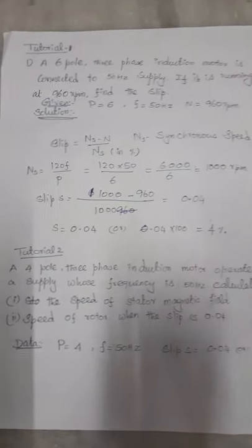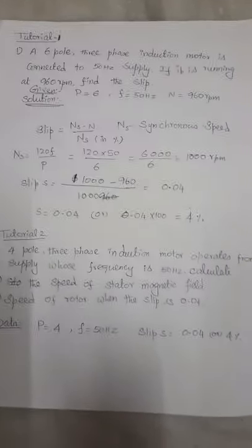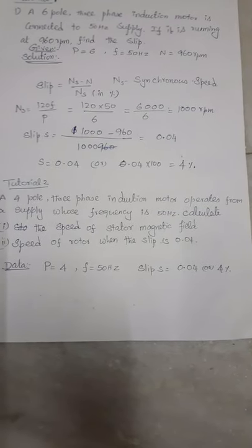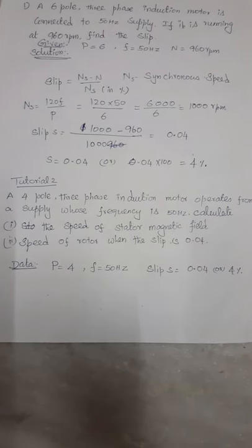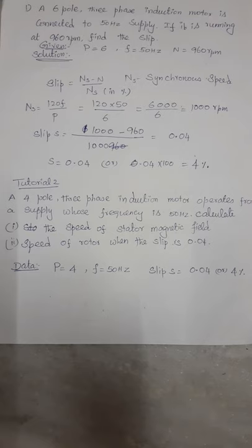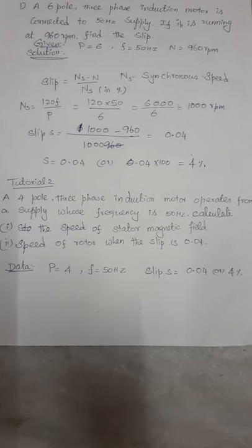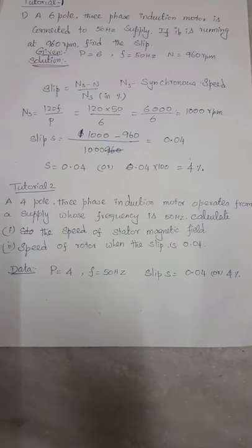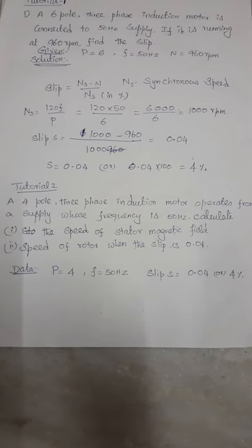Then tutorial 2: a 4 pole three-phase induction motor operates from a supply whose frequency is 50 hertz. Calculate the speed of stator magnetic field and speed of rotor when slip is 0.04.